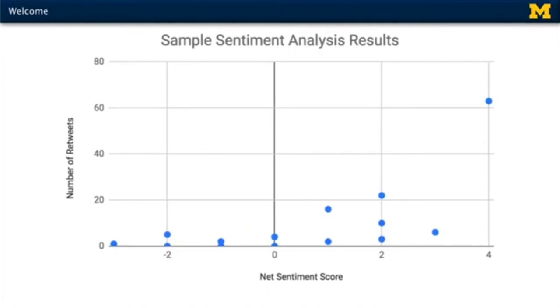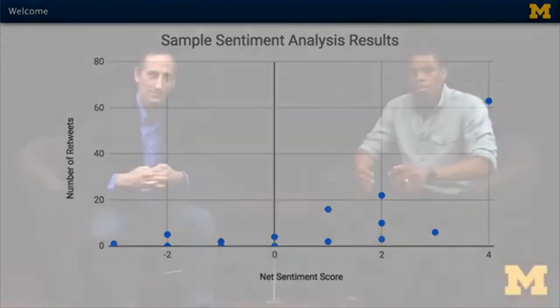The final project will be a little sentiment analysis program. We're going to give you a pile of fake tweets, and you're going to write code that counts how many positive and negative words there are. You'll write out a comma-separated values file, upload it into a spreadsheet, and generate a graph so that you can analyze whether tweets with more positive words get more replies and more retweets. And that's also going to synthesize all of the things that you learned throughout the course.